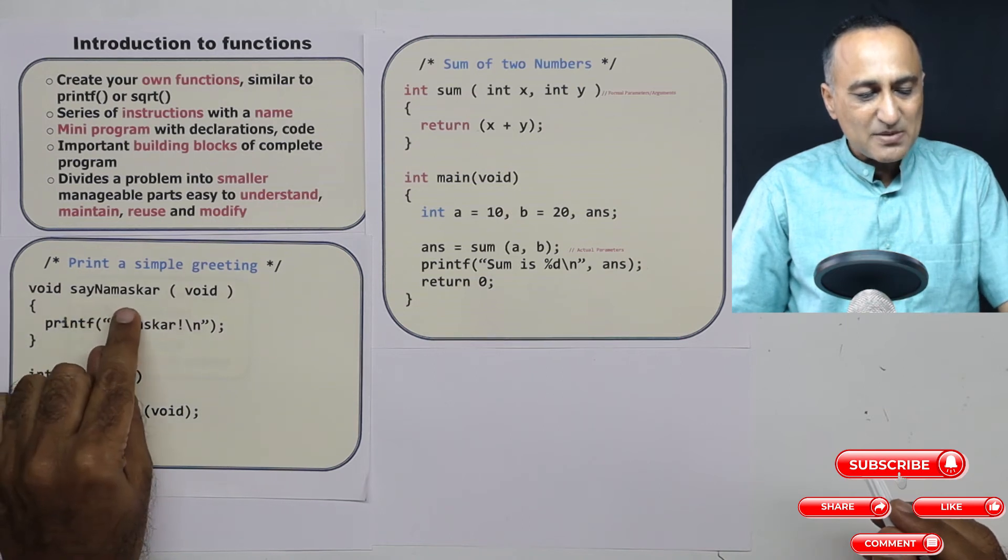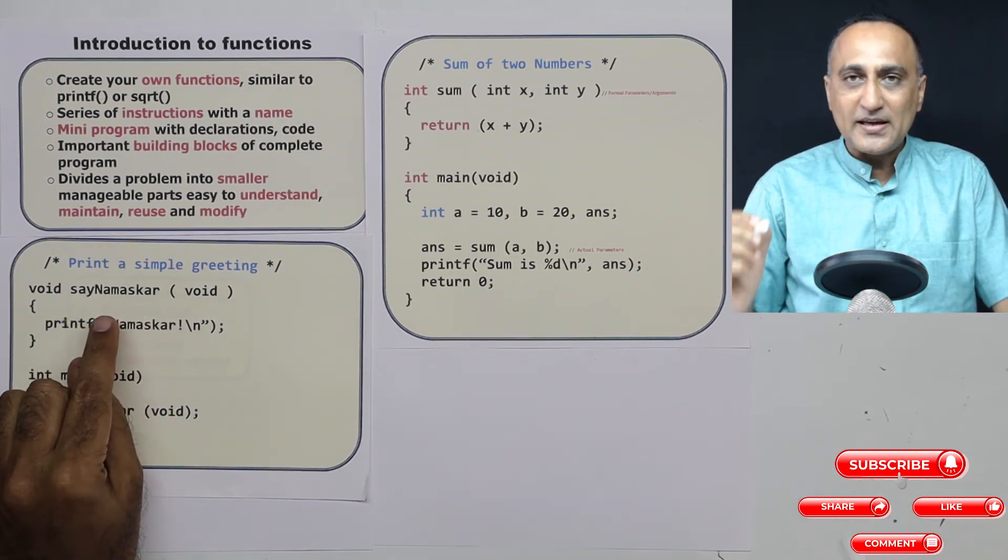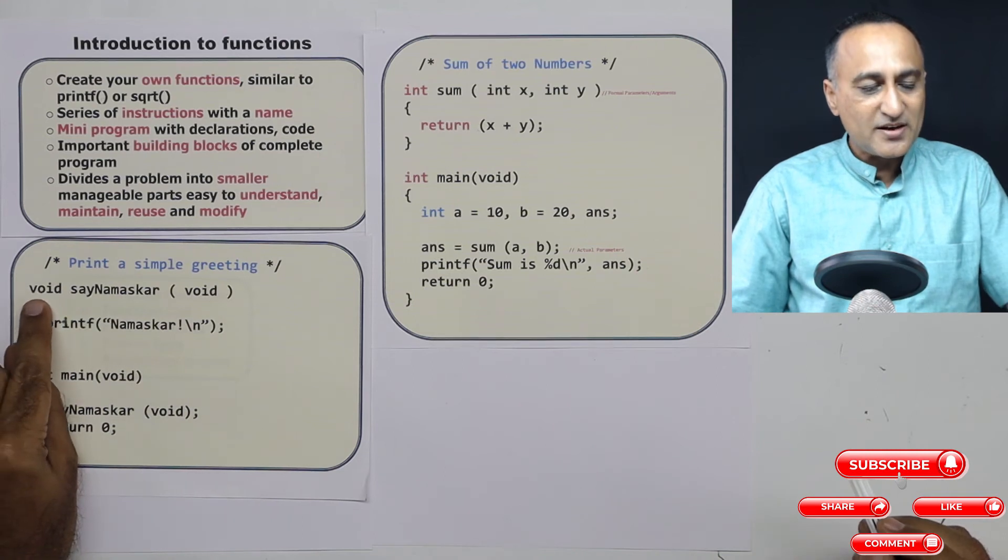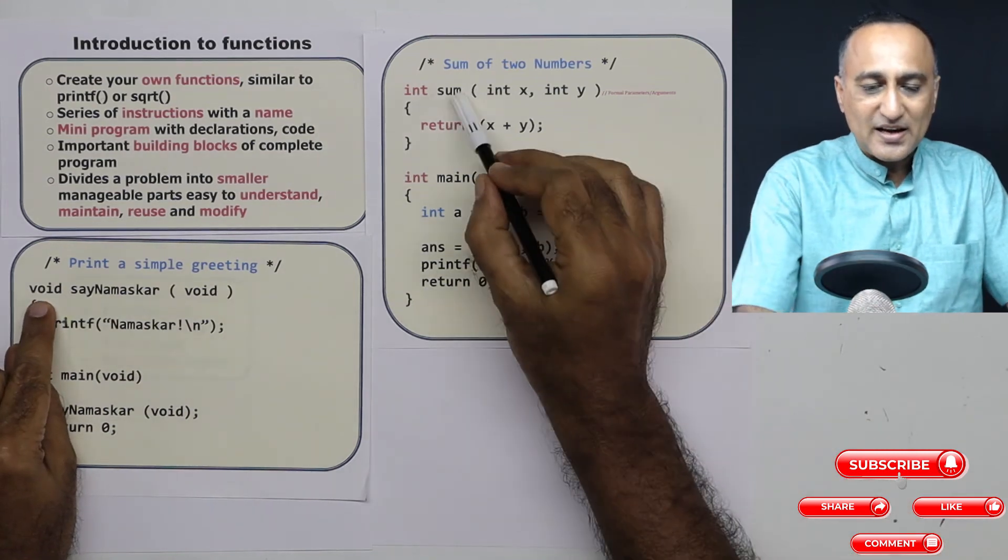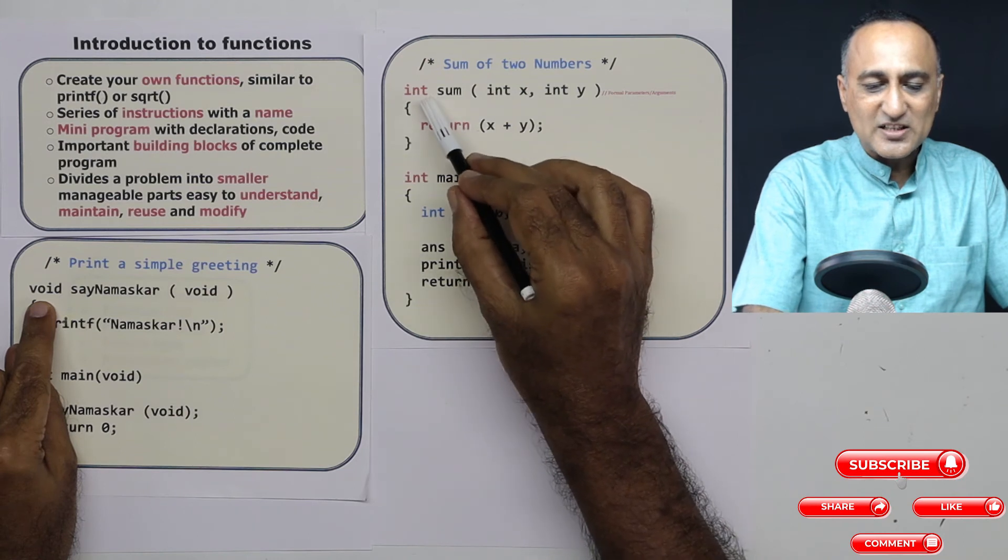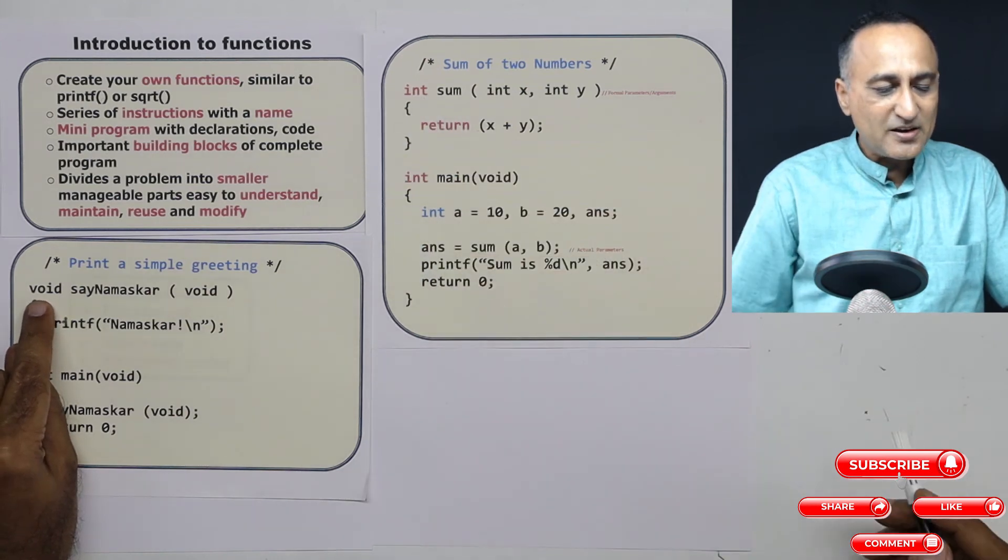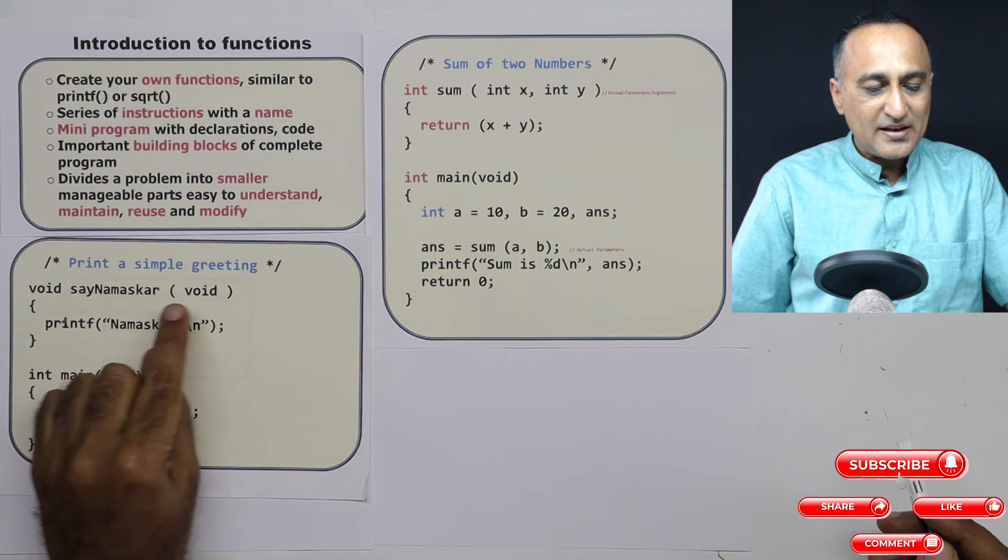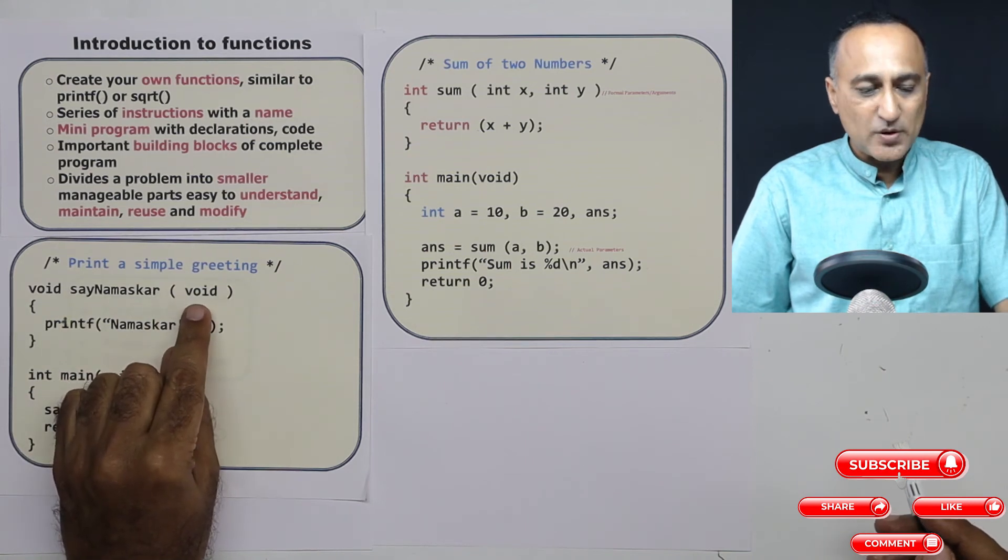Since this sayNamaskar is not returning any value, that's why I have given it the return type as void. Here I was returning an integer data, that's why I said int. Here I am returning nothing, that's why I say void. Here I am not passing any parameter, that's why it is void.